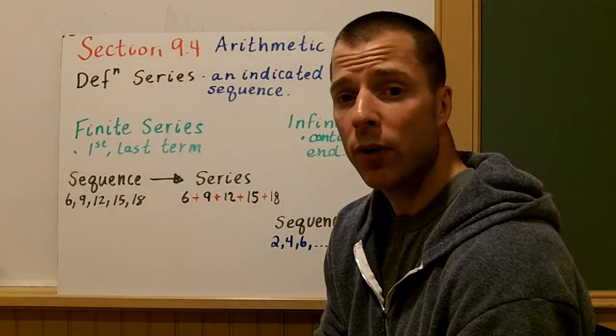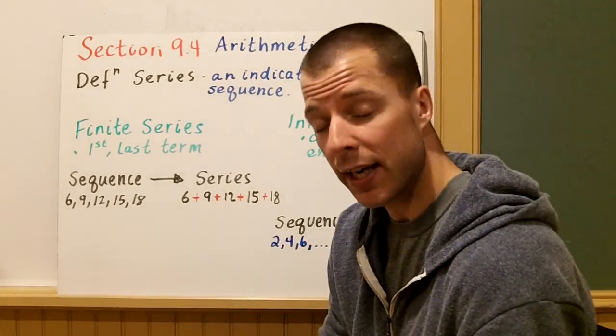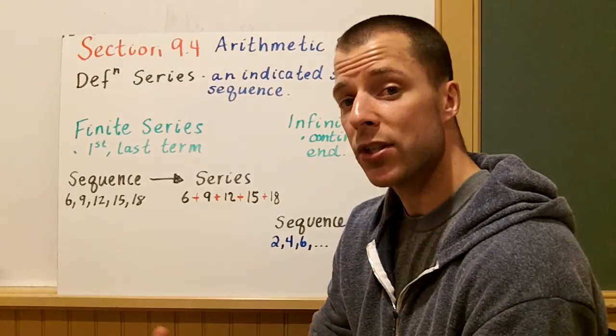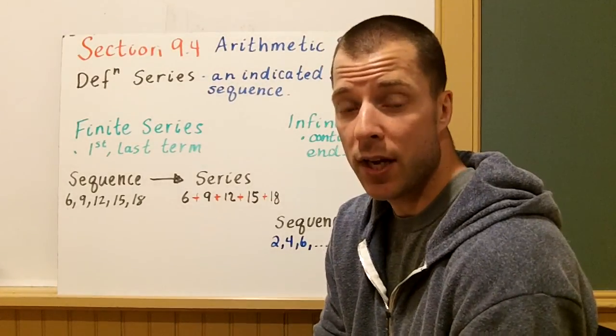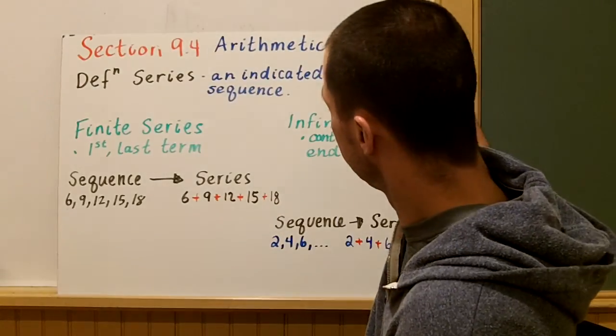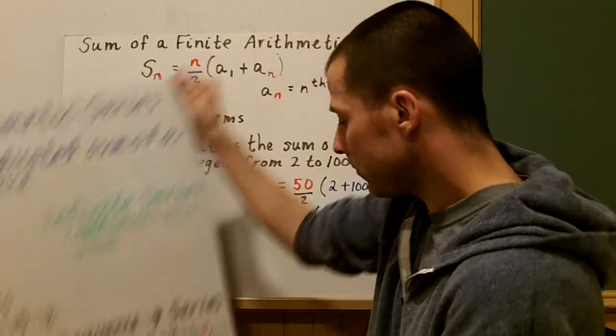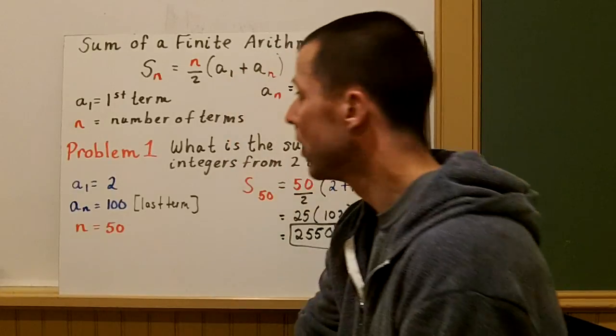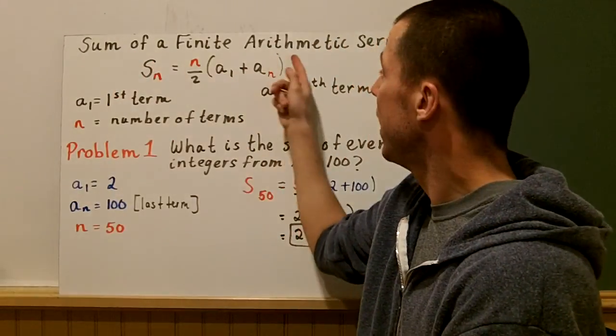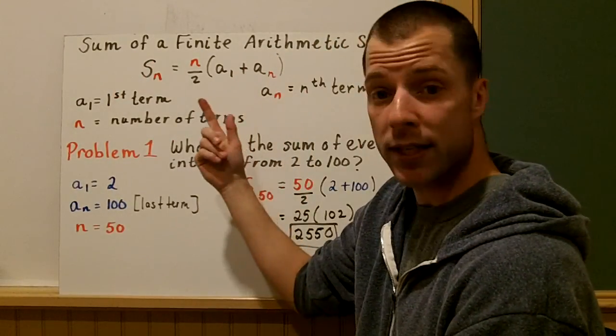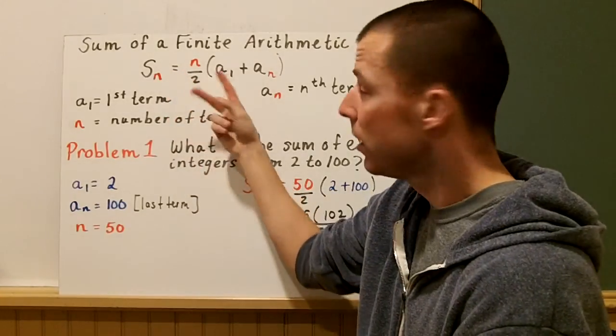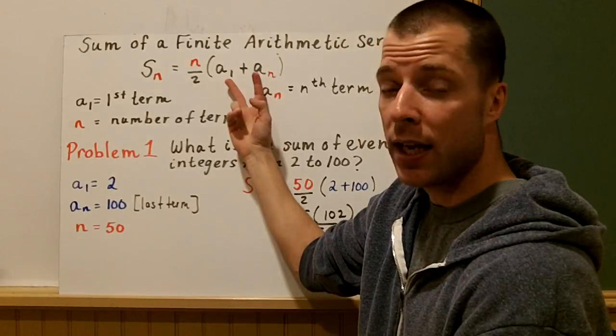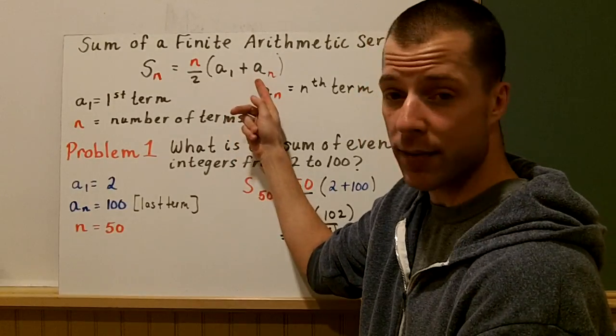We're going to be looking mostly at finite series today, finite arithmetic series. So let's look at a rule that we can use to help us take the sum of a finite series. The sum of a finite arithmetic series is S_n = n/2 × (a_1 + a_n).